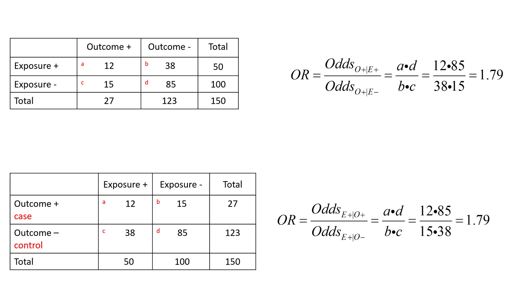Our calculation now represents the odds of exposure given outcome. But look, the odds ratio is still 1.79—exactly the same.